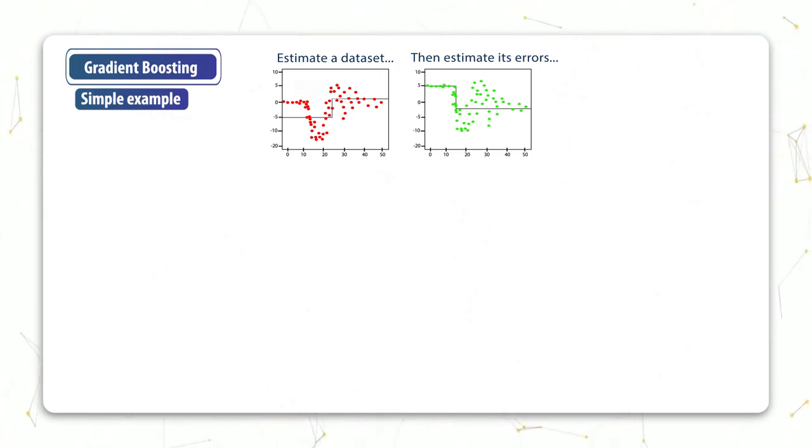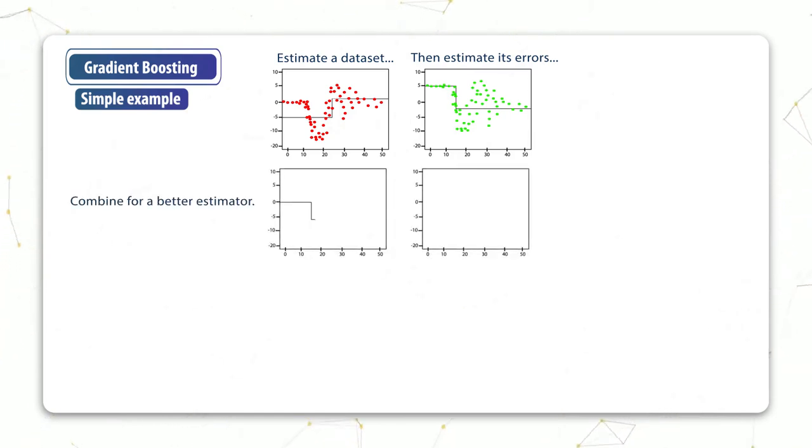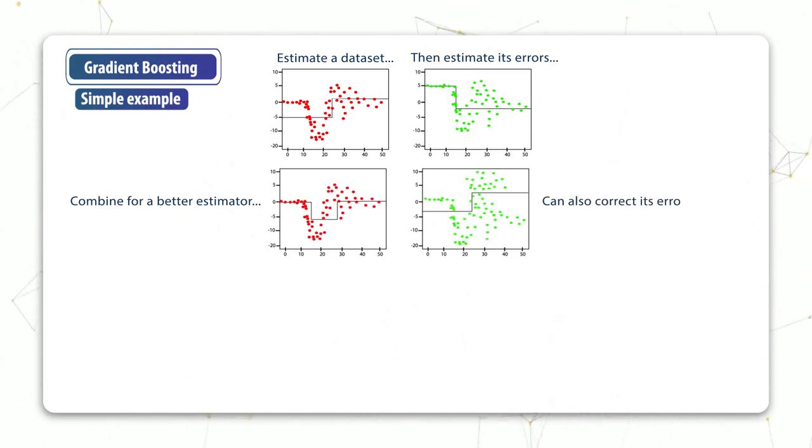But now this new distribution can be estimated by yet another one layer decision tree. And so now adding these two estimators together gives us a new function which is slightly better than the original estimator. And now it has three different regions.